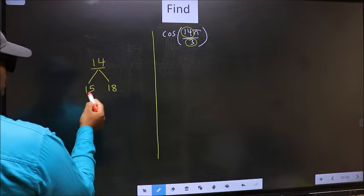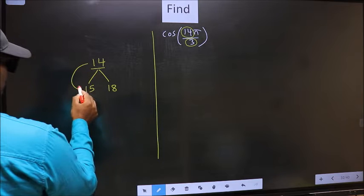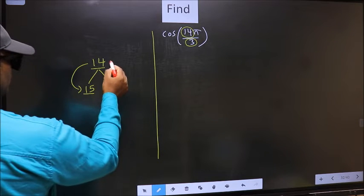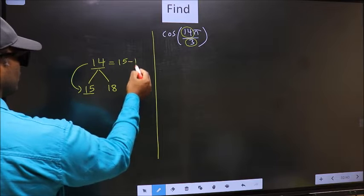Now 14 is close to which multiple? This is close to 15. So now 14 should be written as 15 minus 1.